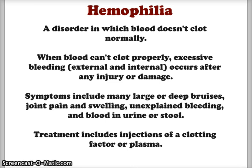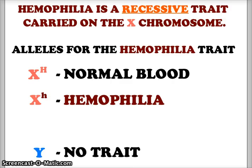In most cases, hemophilia is a recessive trait carried on the X chromosome. We're looking at an X chromosome recessive trait. The alleles we're going to use are capital X capital H for normal blood, X with a lowercase h for hemophilia, and the Y from the male will carry no trait.